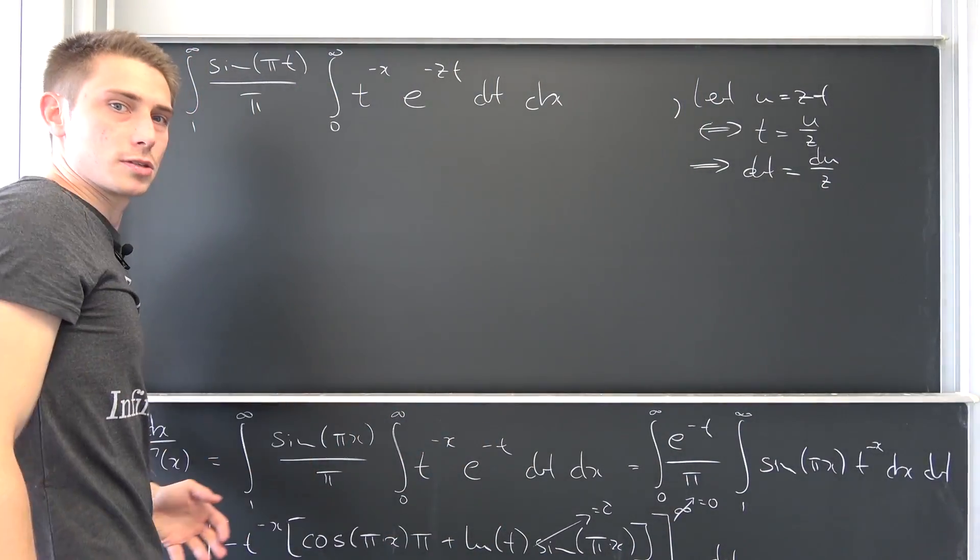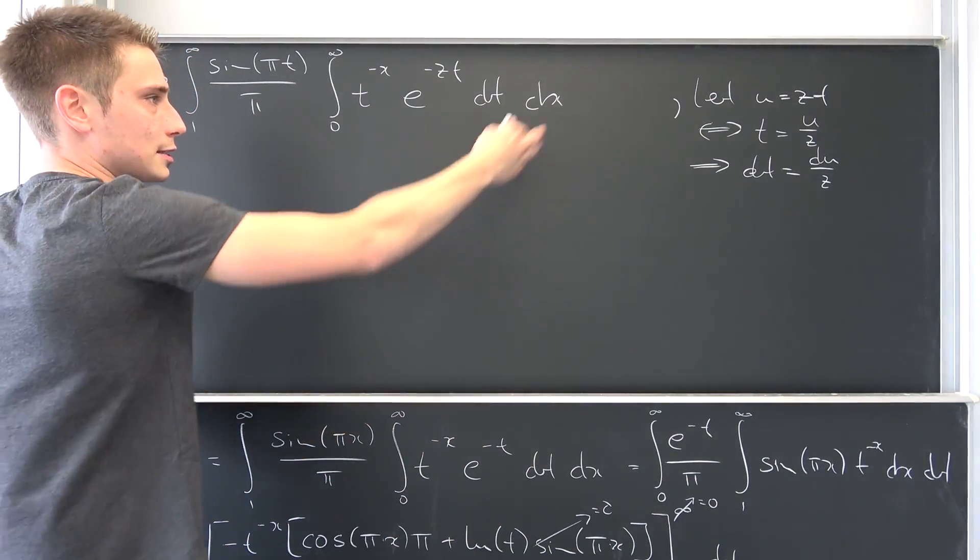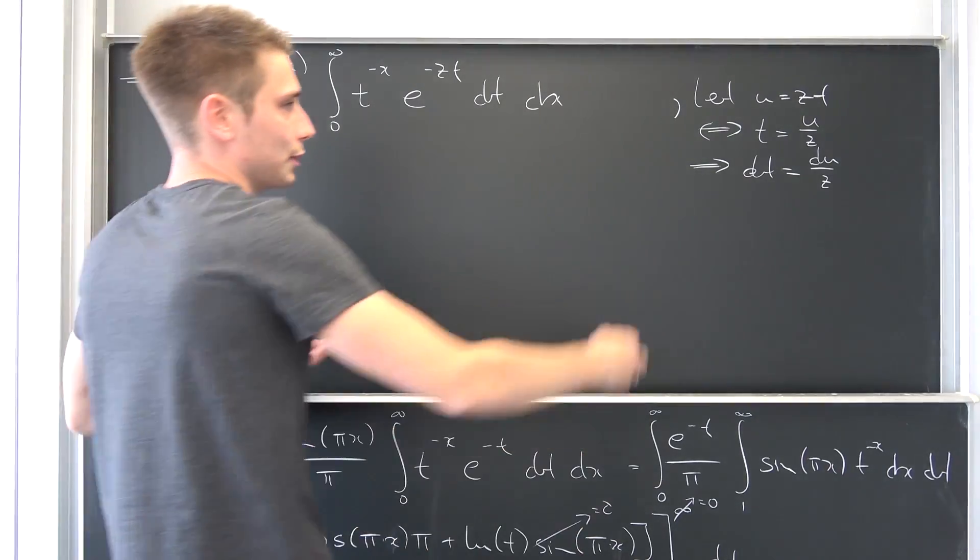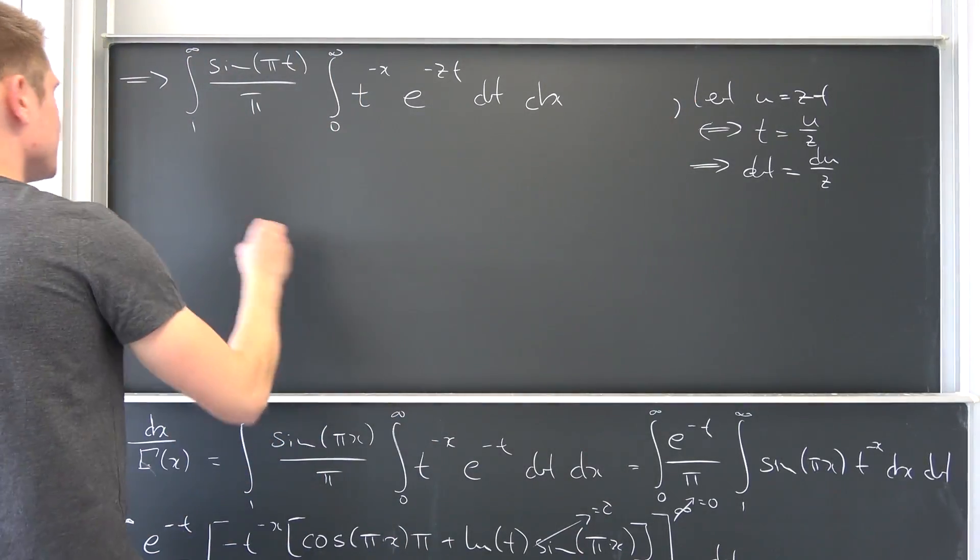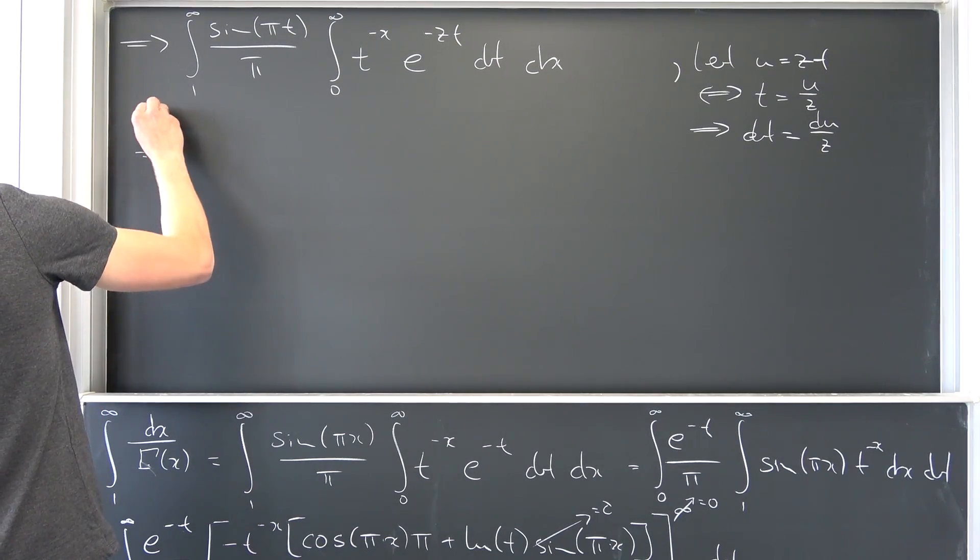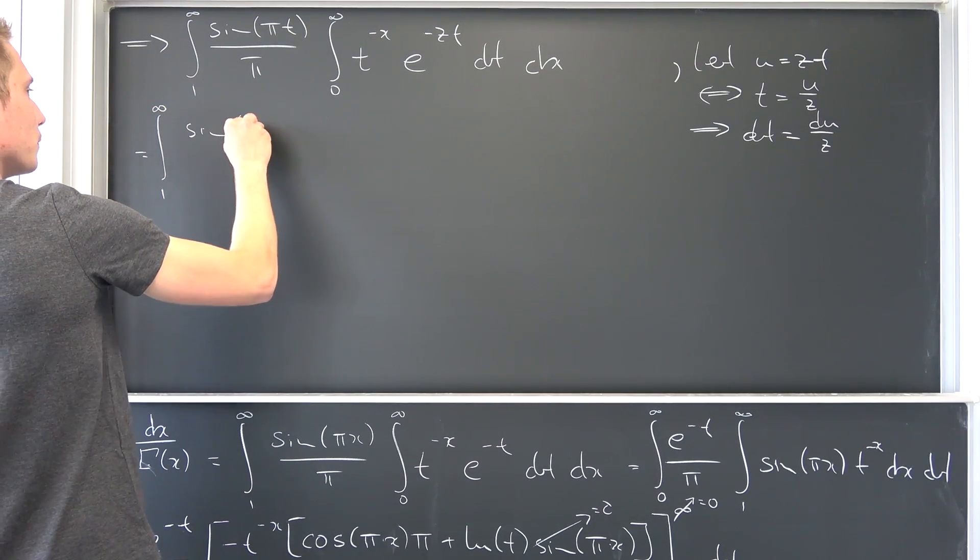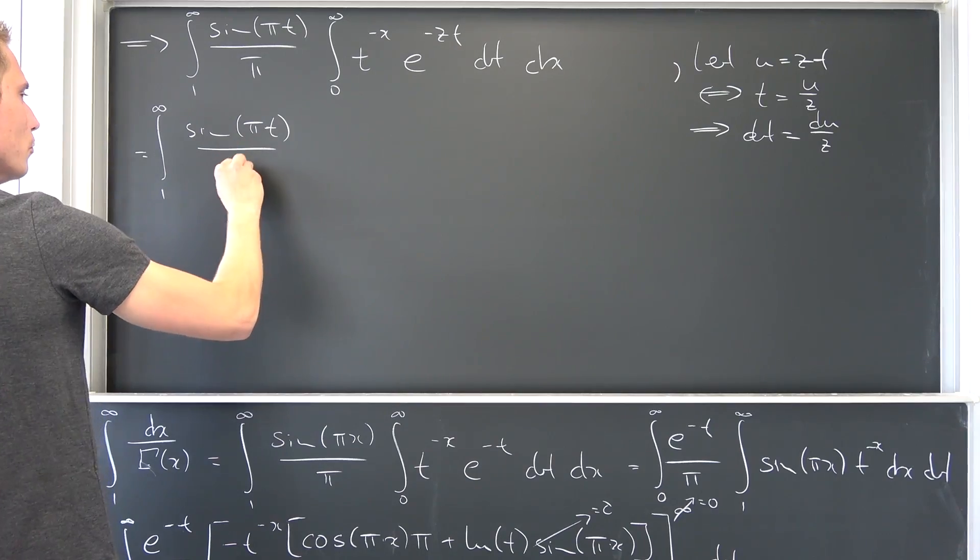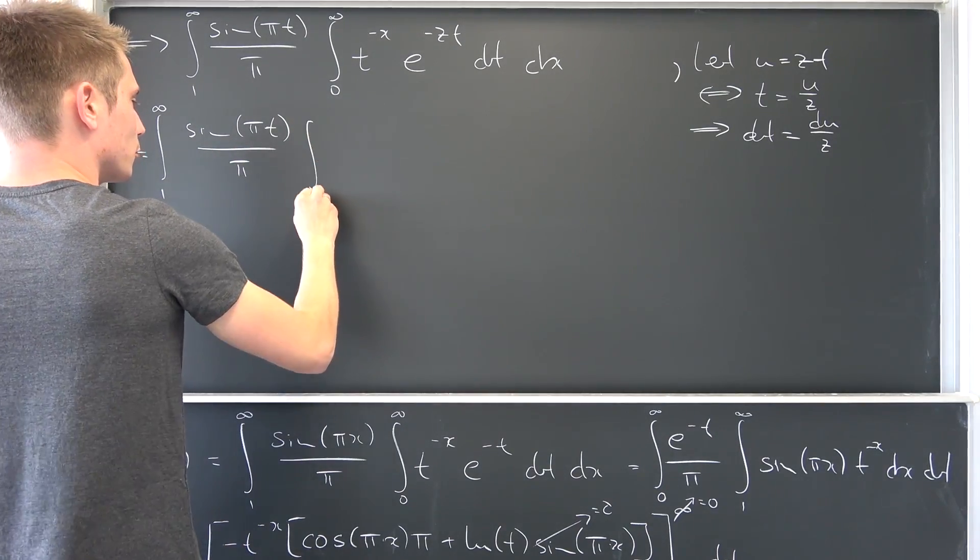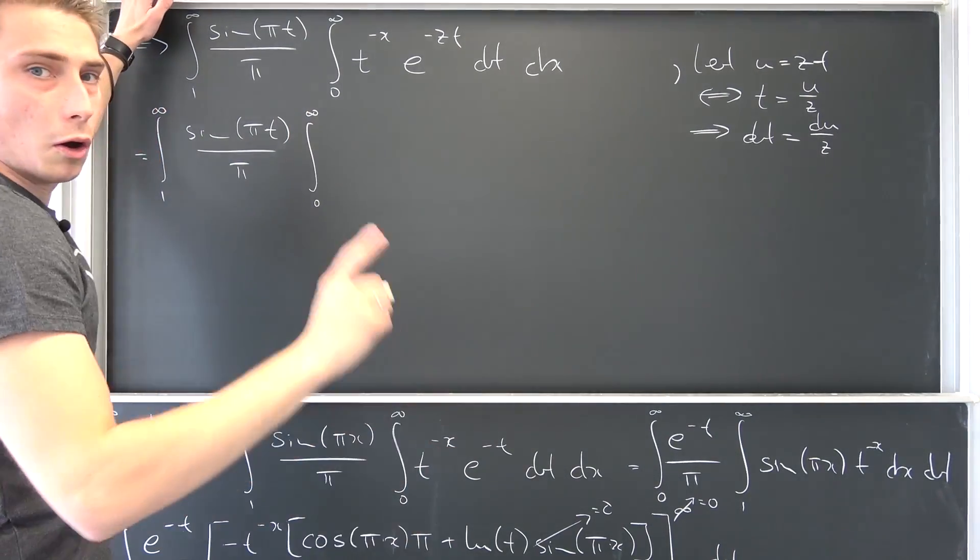Our upper and lower bounds are going to stay how they are. If I let t go to zero and infinity respectively, it's going to be just zero and infinity once again on the u. So integral from one to infinity, sine of pi times t over pi times integral from zero to infinity of...